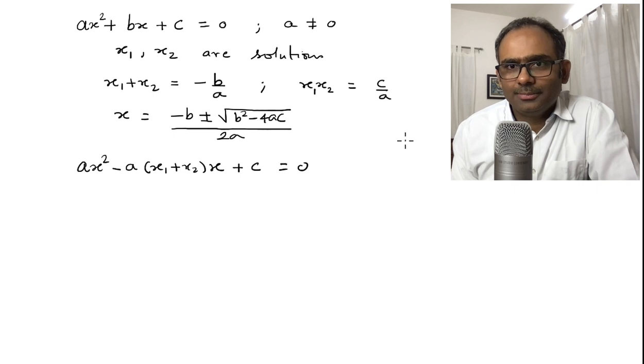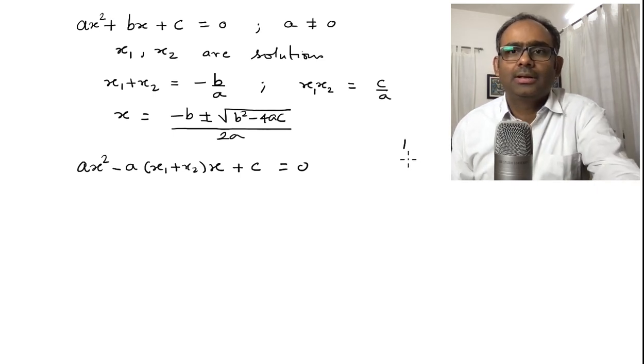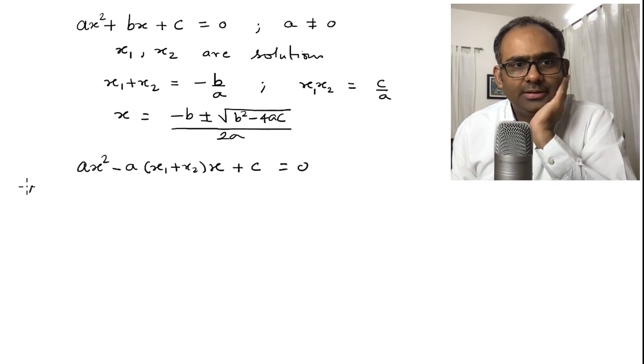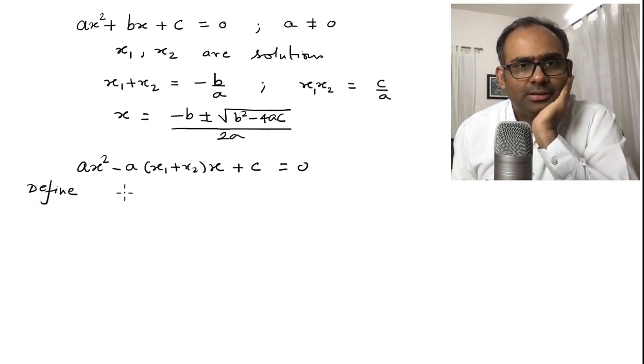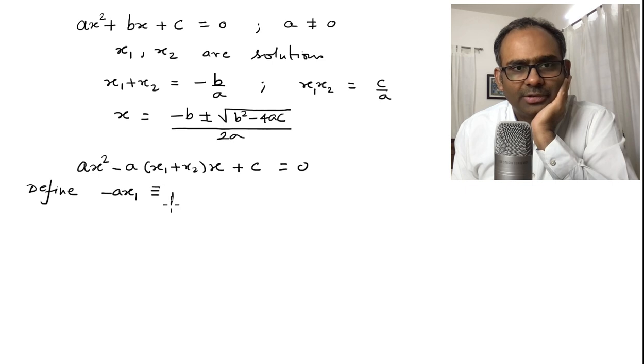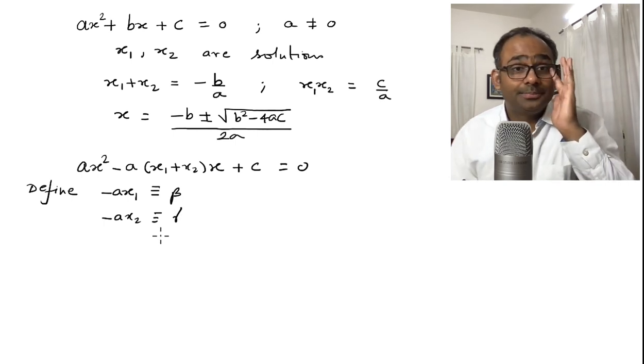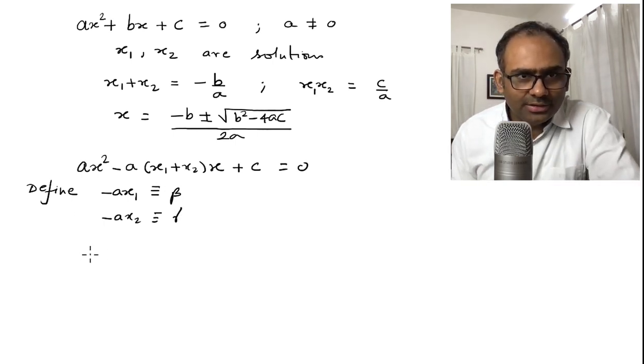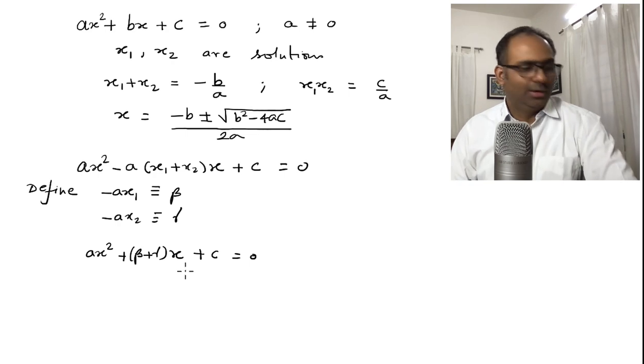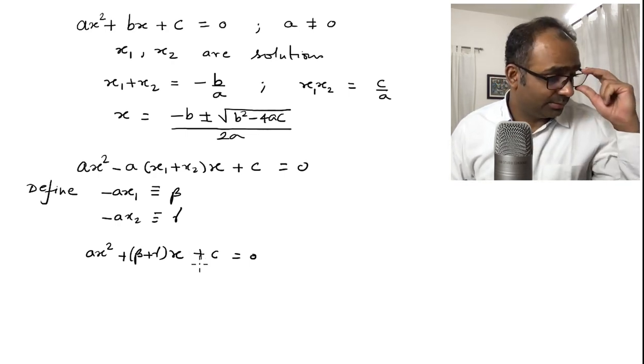Now, let me define minus a times x1 as beta and minus a times x2 as gamma. These are the definitions. Now, with these definitions I have ax square plus beta plus gamma times x plus c equal to 0. That is what we have and I have not made any mistakes so far.